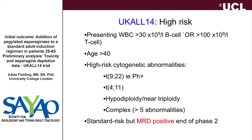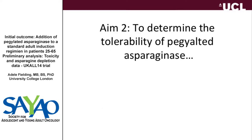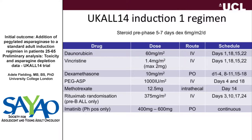Clearly, if we have excessive toxicity during induction or an excess of deaths, we're not going to be able to get people through to transplant, so that's quite important. Our induction regimen at the time we started this trial had patients receive a steroid pre-phase of five to seven days, then a first phase of induction with a fairly hefty dose of anthracycline — the same dose used in the UCAL-12-ECOG-2993 trial. They received dexamethasone in a pulsed fashion, and patients were assigned to receive pegylated asparaginase at 1,000 international units per meter squared on days four and eight of this regimen.